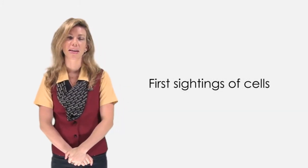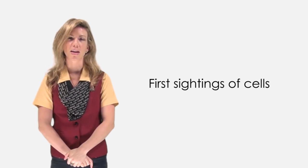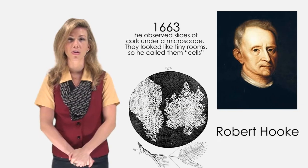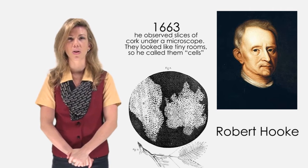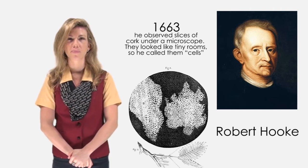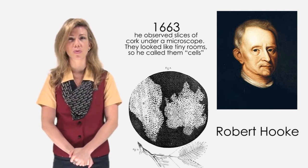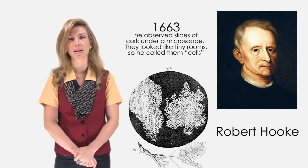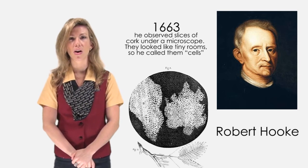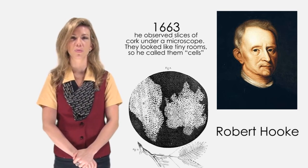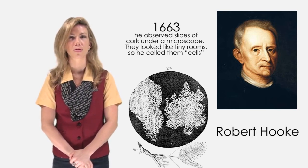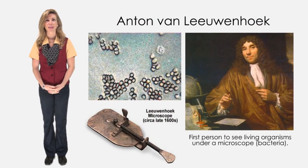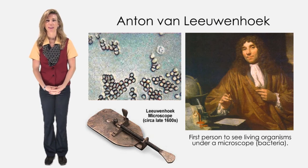Three people made key discoveries in the early study of cells. One of them was Robert Hooke, who saw slices of cork under a microscope. Cork is the bark of a tree made of dead cells. Hooke thought they looked like tiny rectangular rooms, so he called them cells, which means small rooms. Anton discovered the first living things to be seen under a microscope. These were bacteria, which he called little animals.